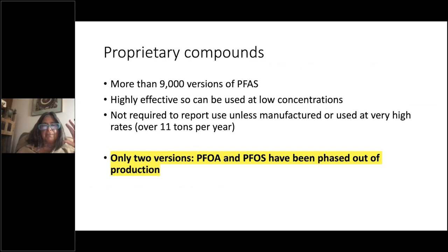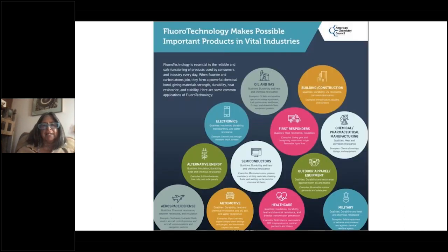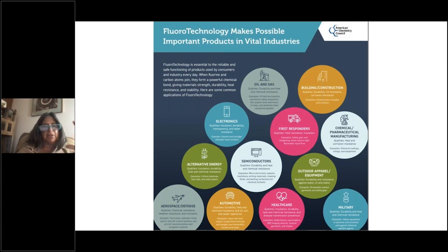Of the 9,000-plus versions of these compounds, in the US it's not required to report how much you use in manufacturing unless you use a relatively enormous rate for something used in very low parts per million. Remember too that only two versions — the very long chain compounds PFOA and PFOS — have been phased out of production; that happened in the early 2000s. At the same time everybody's concerned about these compounds, the American Chemical Council is bragging about using this type of compound. So there's still manufacturing, still in use, still ubiquitous — just not the two famous long-chain banned ones.